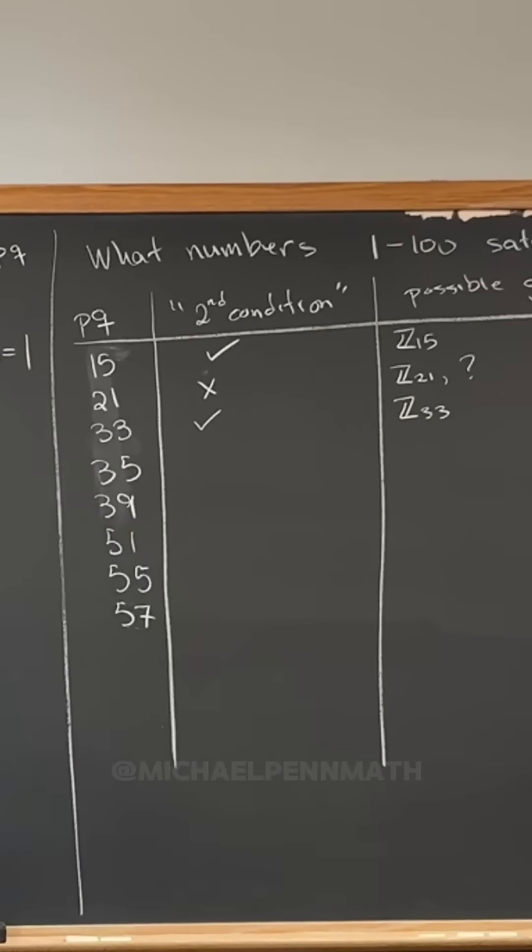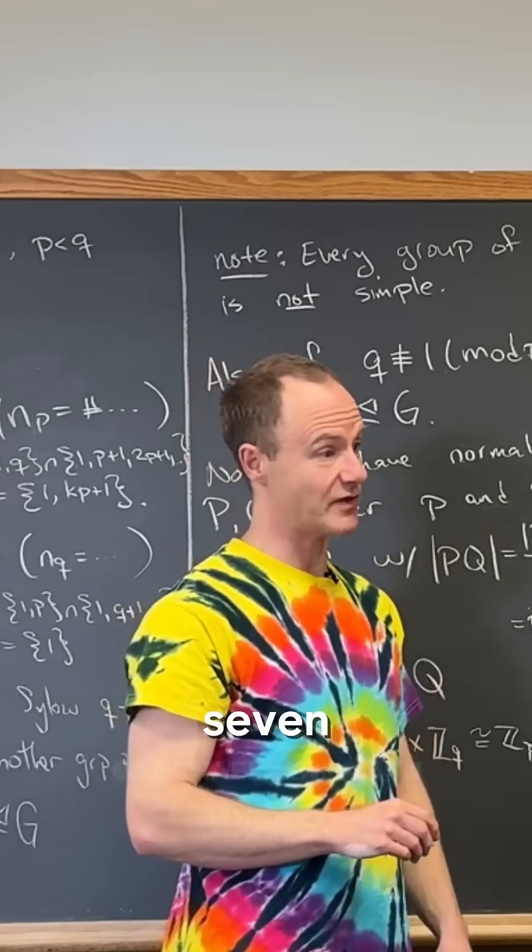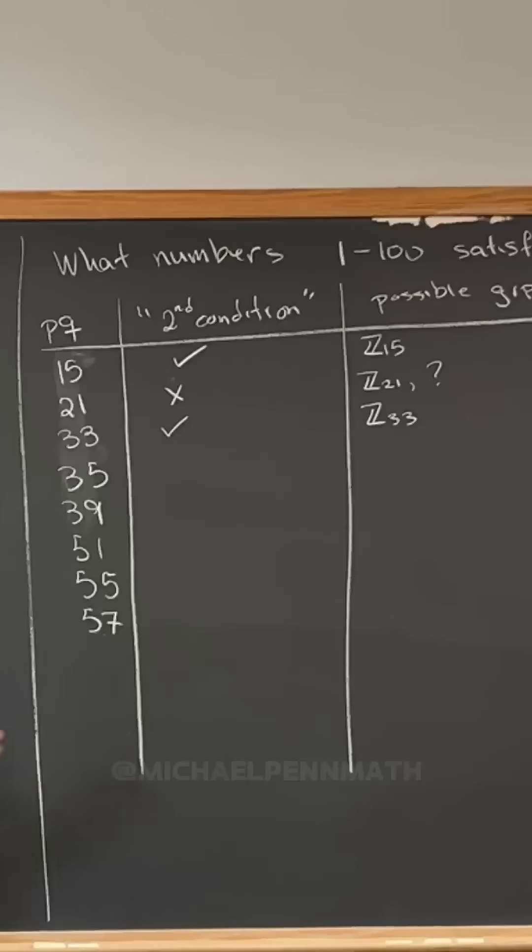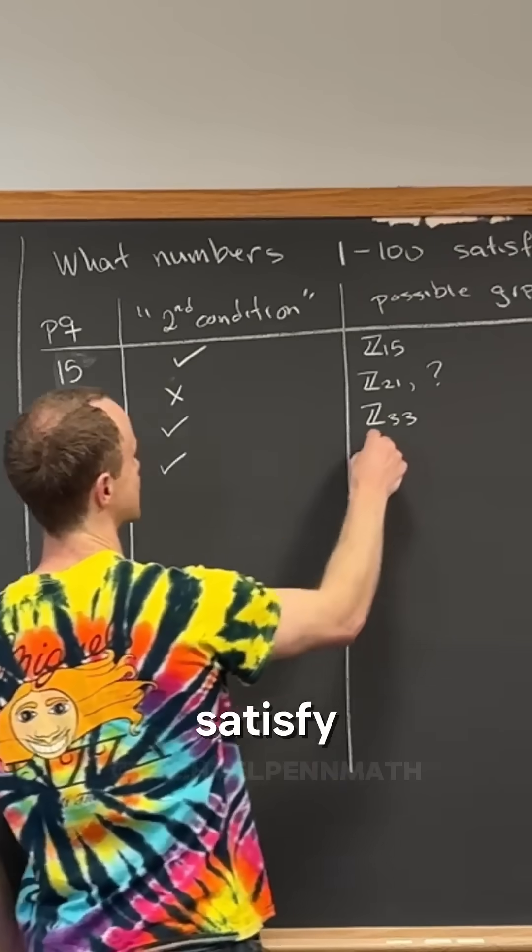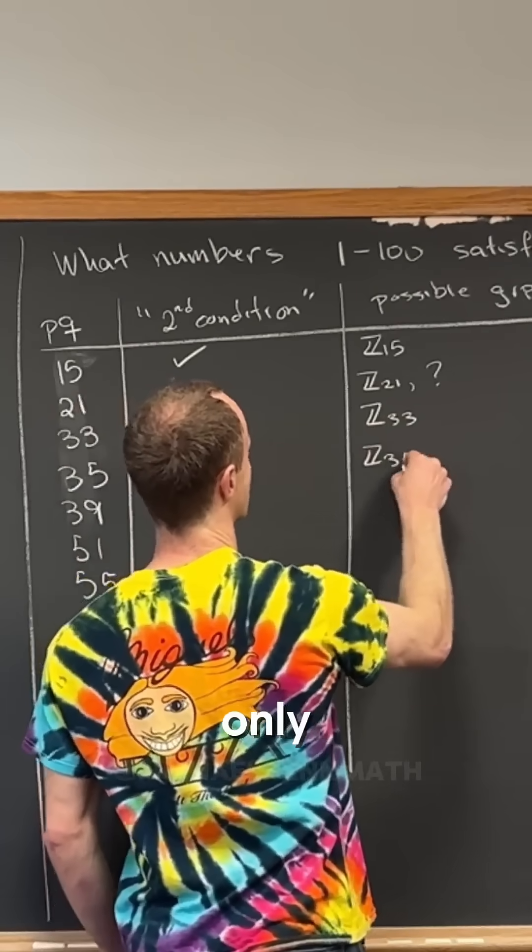Then what about 35? Larger prime, seven. Is seven congruent to one mod five? No. So yeah, so it does satisfy. So that means Z35, that's the only one.